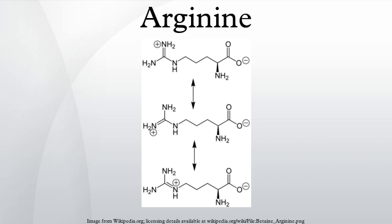Arginine is synthesized from citrulline by the sequential action of the cytosolic enzymes argininosuccinate synthetase and argininosuccinate lyase. In terms of energy, this is costly, as the synthesis of each molecule of argininosuccinate requires hydrolysis of ATP to AMP — that is, two ATP equivalents. In essence, taking an excess of arginine gives more energy by saving ATPs that can be used elsewhere.